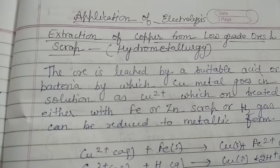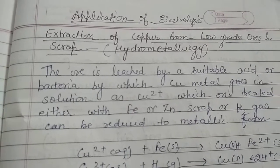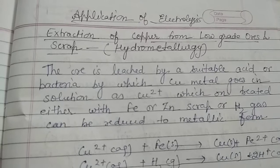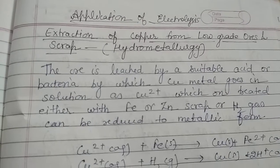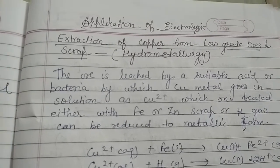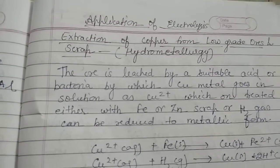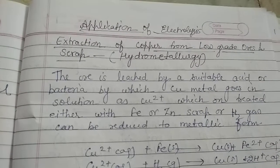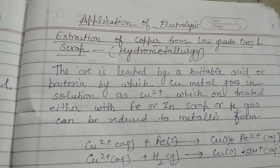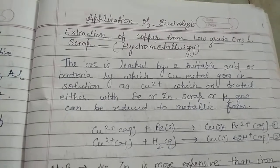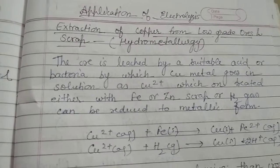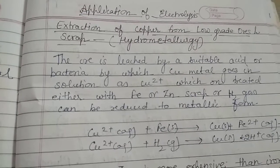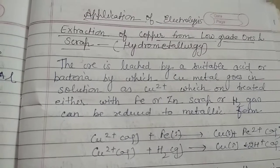Good morning dear students. As yesterday we discussed the electrochemical principles of metallurgy or electrometallurgy, in which we discussed that pyrometallurgy is not applicable in case of very less reactive metals such as sodium, magnesium, aluminium, etc. So we have to obtain the metal by the electrolysis process.